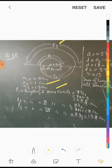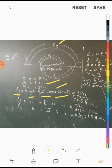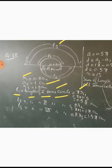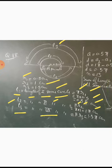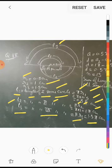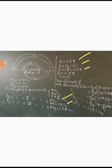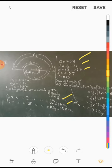We need to find the sum of lengths of all 13 semi-circles. The circumference of a full circle is 2πr, so for a semi-circle it is πr. Length L1 = π×0.5 = 0.5π cm, L2 = π×1 = π cm, L3 = π×1.5 = 1.5π cm. So first term a = 0.5π, common difference d = π - 0.5π = 0.5π, and number of semi-circles n = 13.